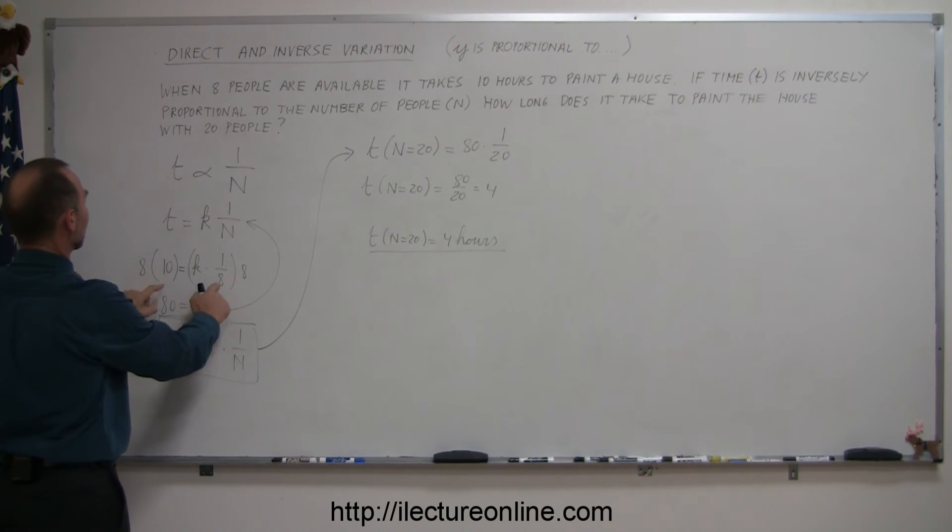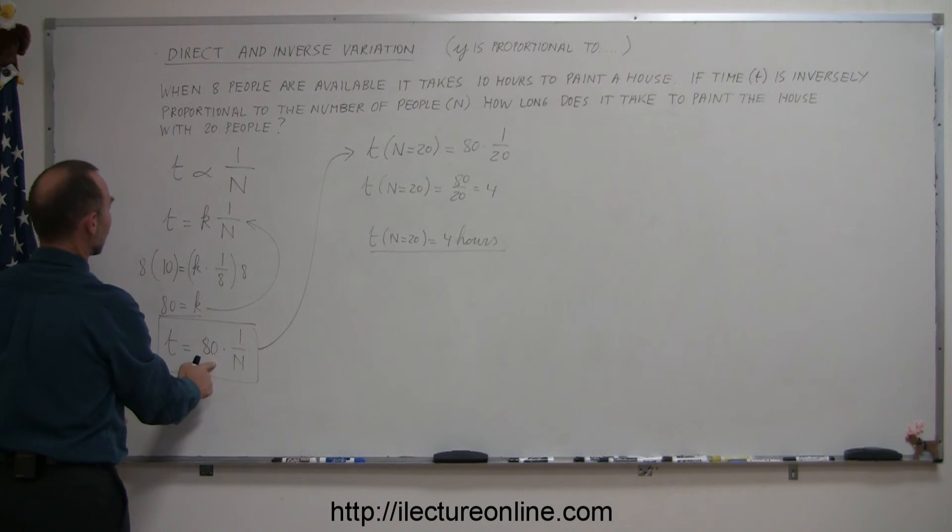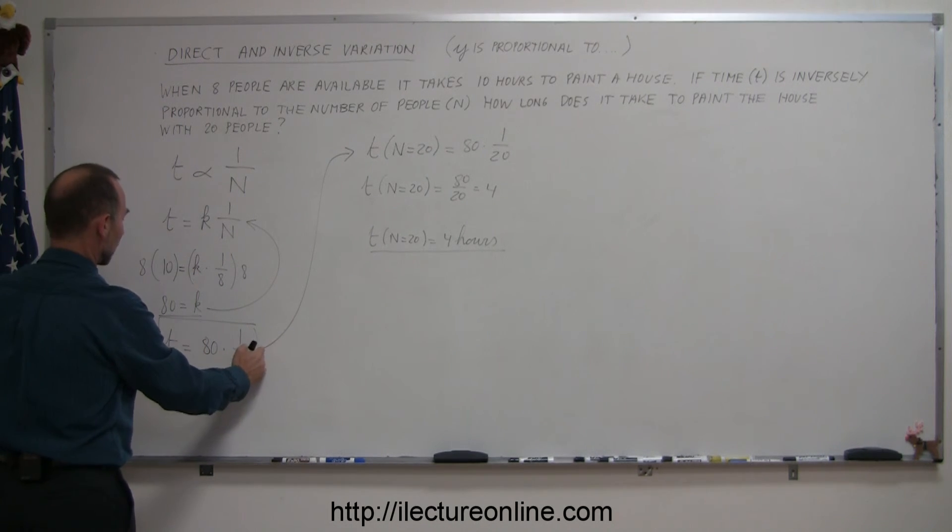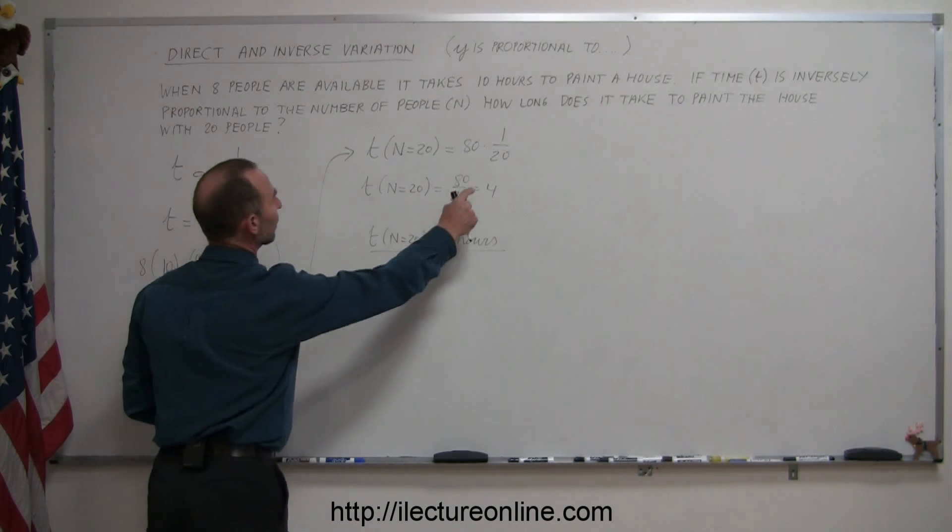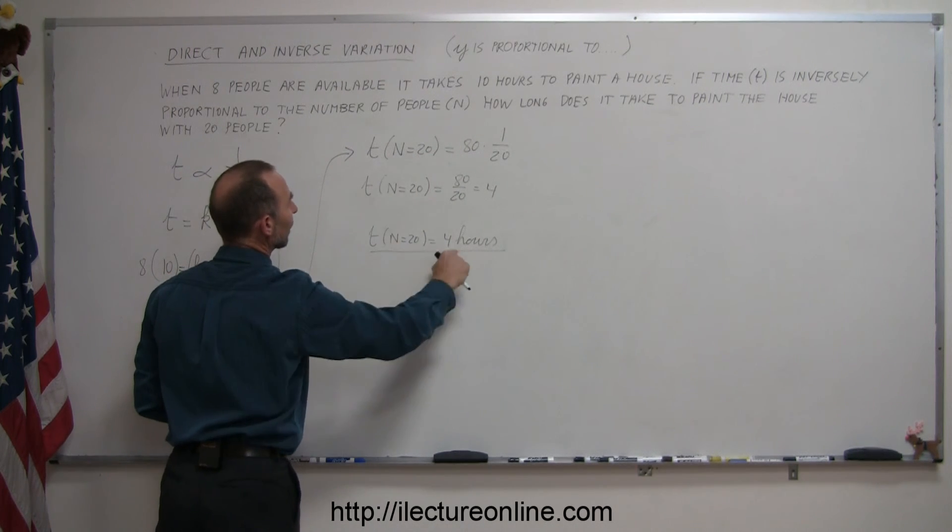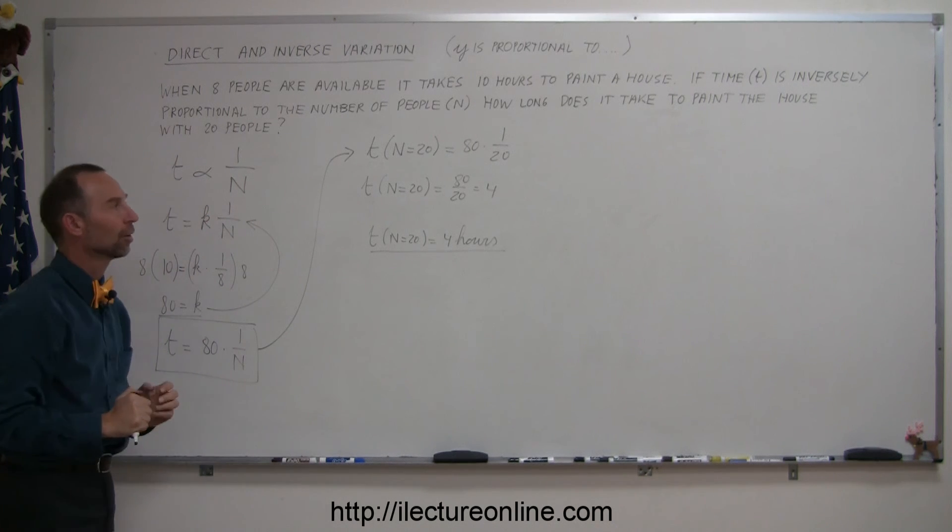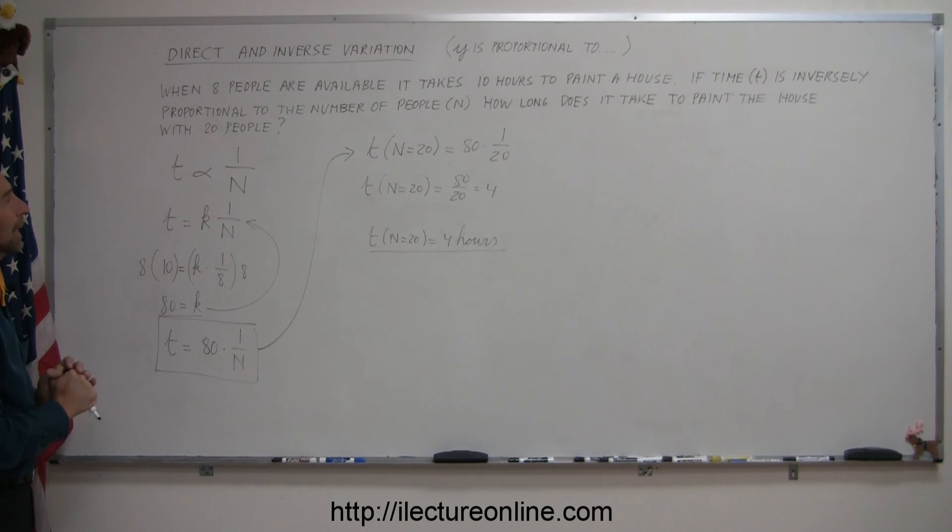You plug in the values that were given to figure out what k is equal to. You plug that back into your equation to come up with the equation including the value for k. And then you plug in the new value to find out what the new time is in this case for painting the house.